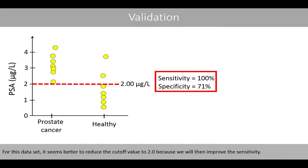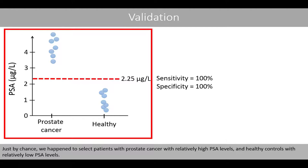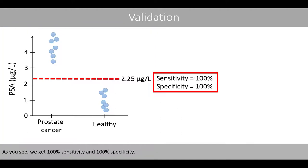For this new dataset, it seems better to reduce the cut-off value to 2.0 to improve the sensitivity. Suppose we collected a third dataset and used the cut-off value of 2.25 again. Just by chance, we might select patients with prostate cancer with a relatively high PSA level and healthy controls with a relatively low PSA level, giving us 100% sensitivity and 100% specificity.